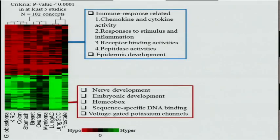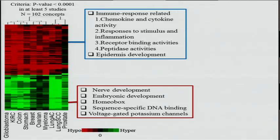Here are some initial results from clustering for these 10 cancer types. For this heat map, our criteria was that biological concepts or pathways had to have a p-value less than 10 to the negative 4 in at least 5 of the cancer types. Each row represents a biological concept or pathway; red indicates hypomethylated genes and green indicates hypermethylated genes or pathways. Among the hypomethylated pathways were many immune-related pathways and gene sets, including chemokine and cytokine activity, inflammation pathways, receptor binding activities, peptidase activities important for breaking through the extracellular matrix, and epidermis development. Since these were hypomethylated, we would expect them to have increased expression levels in cancer.